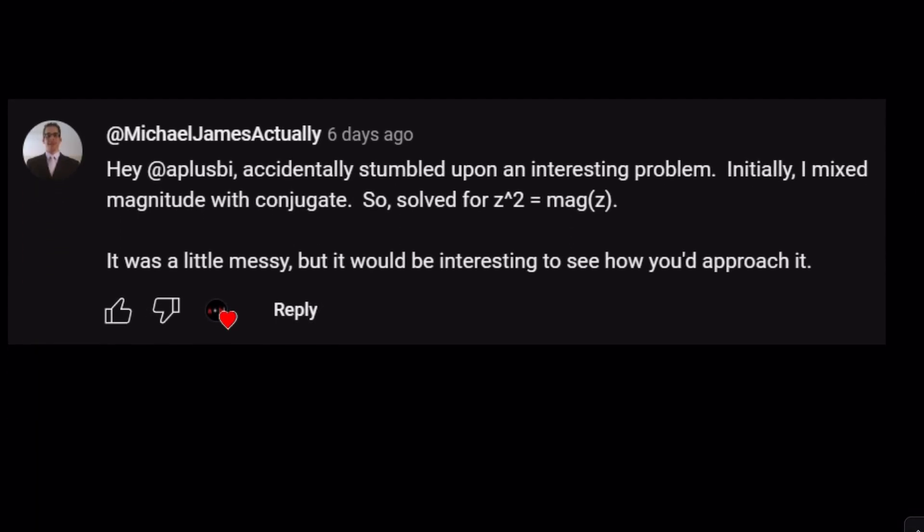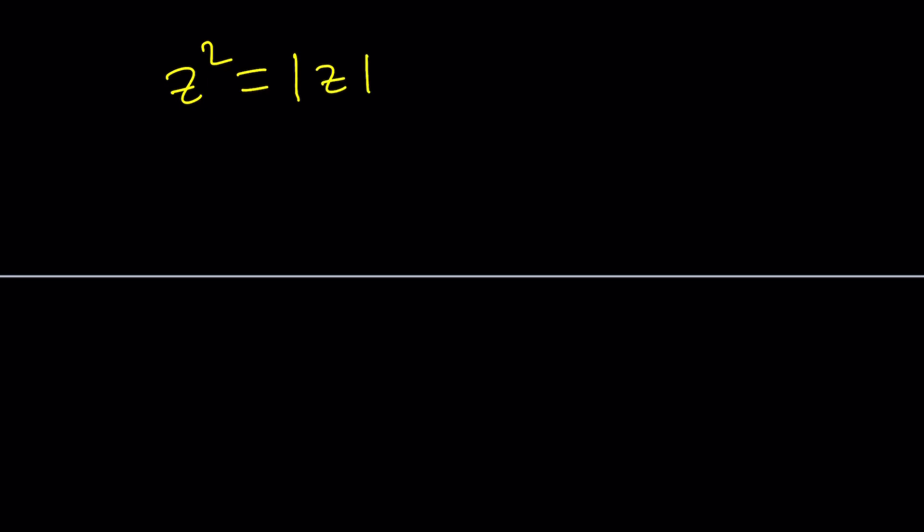First of all I just want to say thank you. This problem was actually suggested by Michael James actually and he said that he stumbled upon this problem and he solved for it and he wanted to see my approach. So here we go. Let's go ahead and take a look at how we can solve this problem. So we have z squared is absolute value of z and let's see how we can solve this.